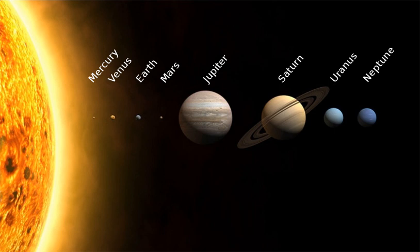The four outer planets are giant planets, being substantially more massive than the terrestrials. The two largest planets, Jupiter and Saturn, are gas giants, being composed mainly of hydrogen and helium. The two outermost planets, Uranus and Neptune, are ice giants, being composed mostly of substances with relatively high melting points compared with hydrogen and helium, called volatiles, such as water, ammonia and methane.